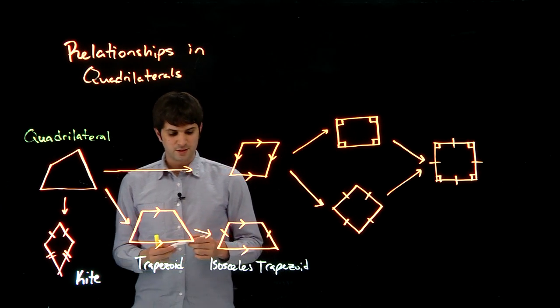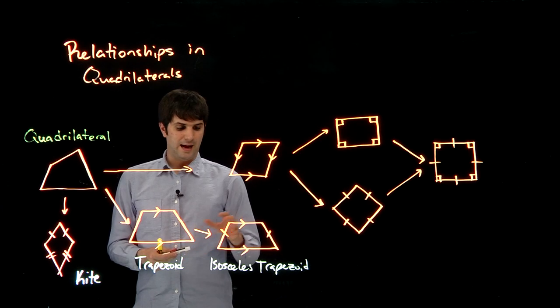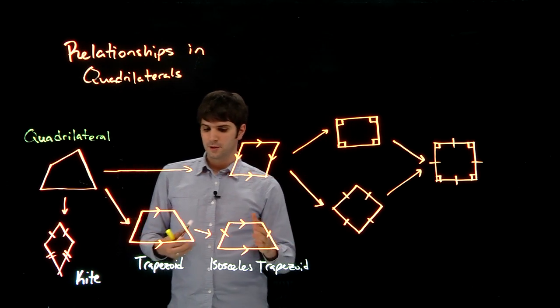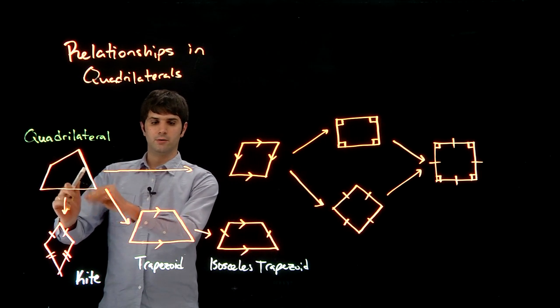So an isosceles trapezoid is a trapezoid where the other two sides, the non-parallel sides are congruent. So we have trapezoids, isosceles trapezoids, these are all part of quadrilaterals.